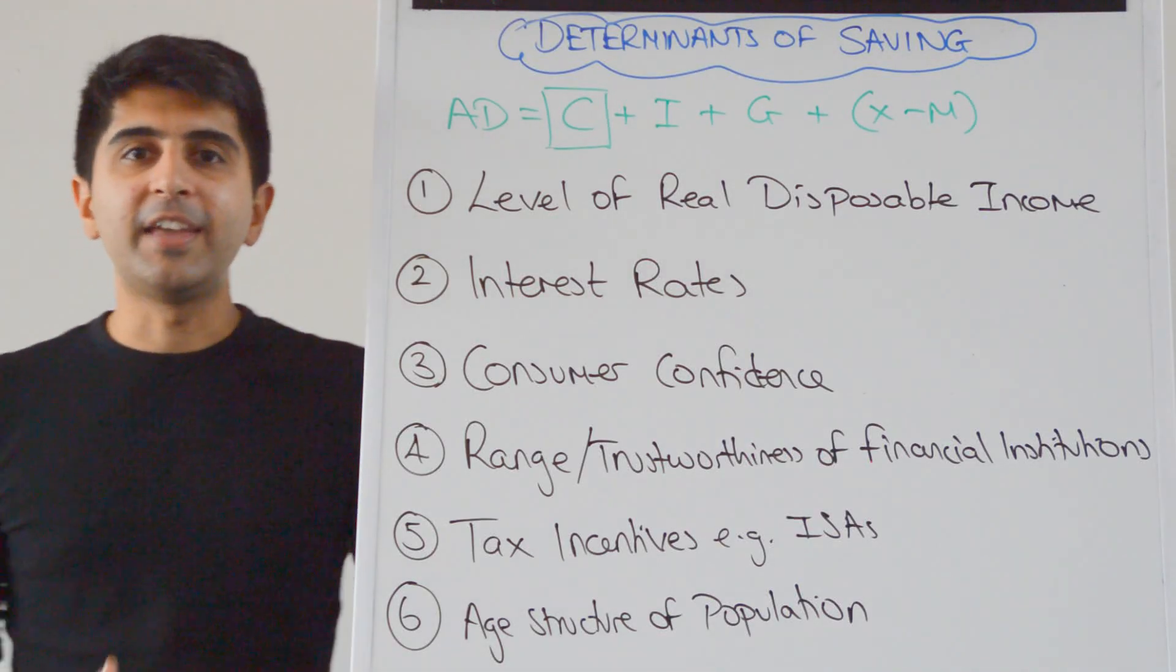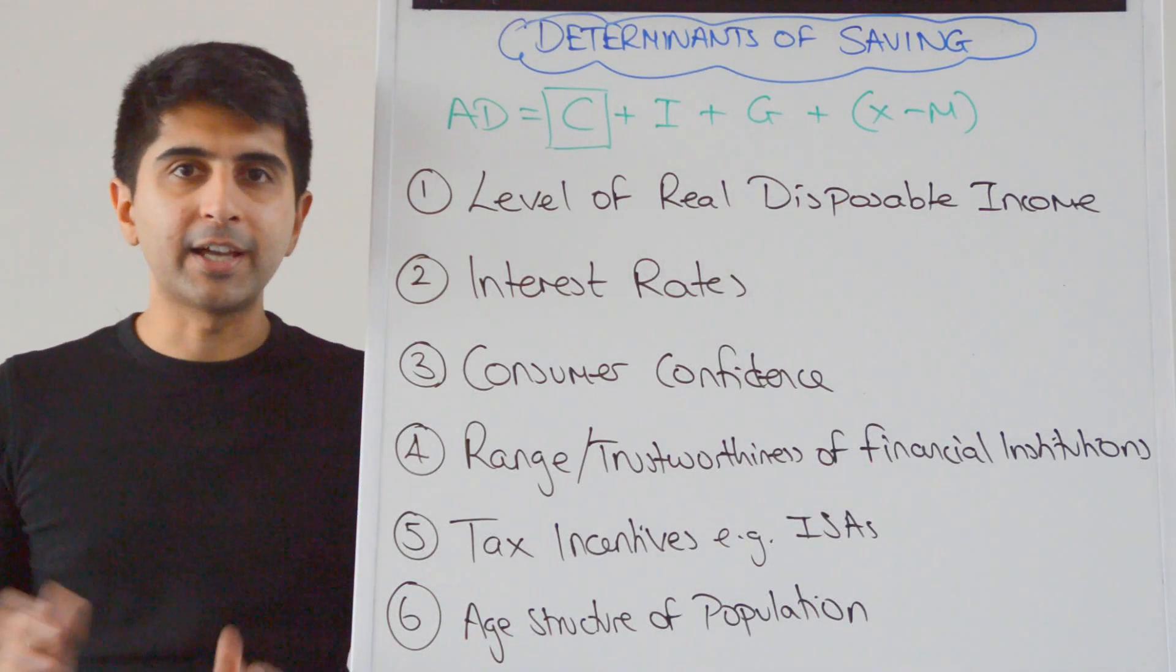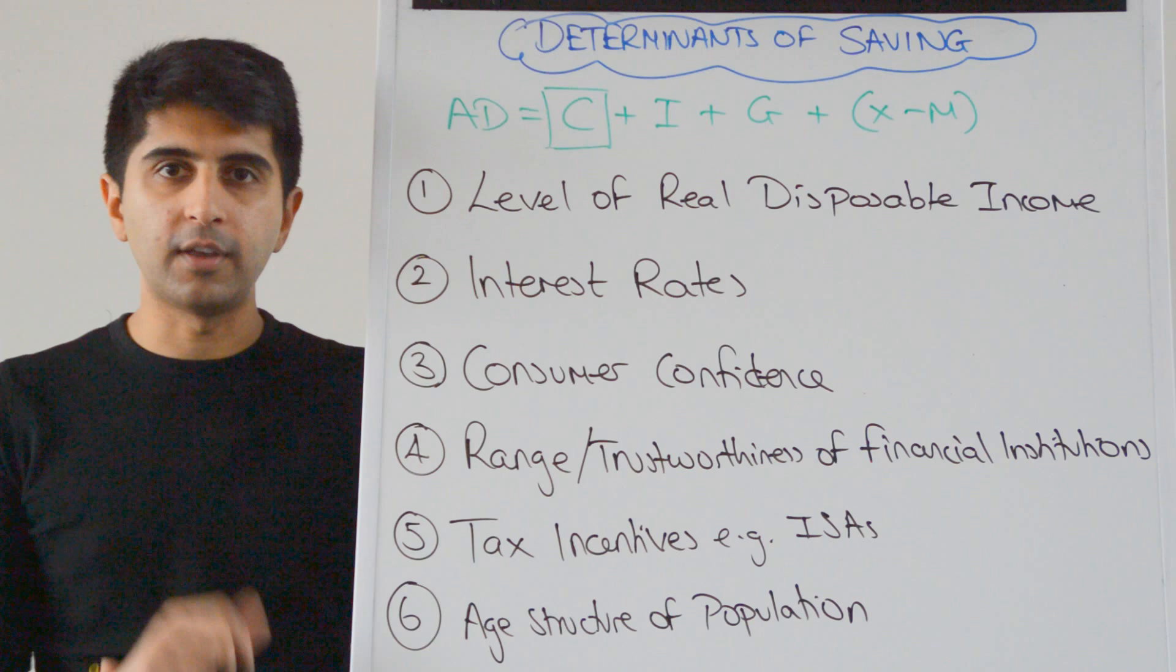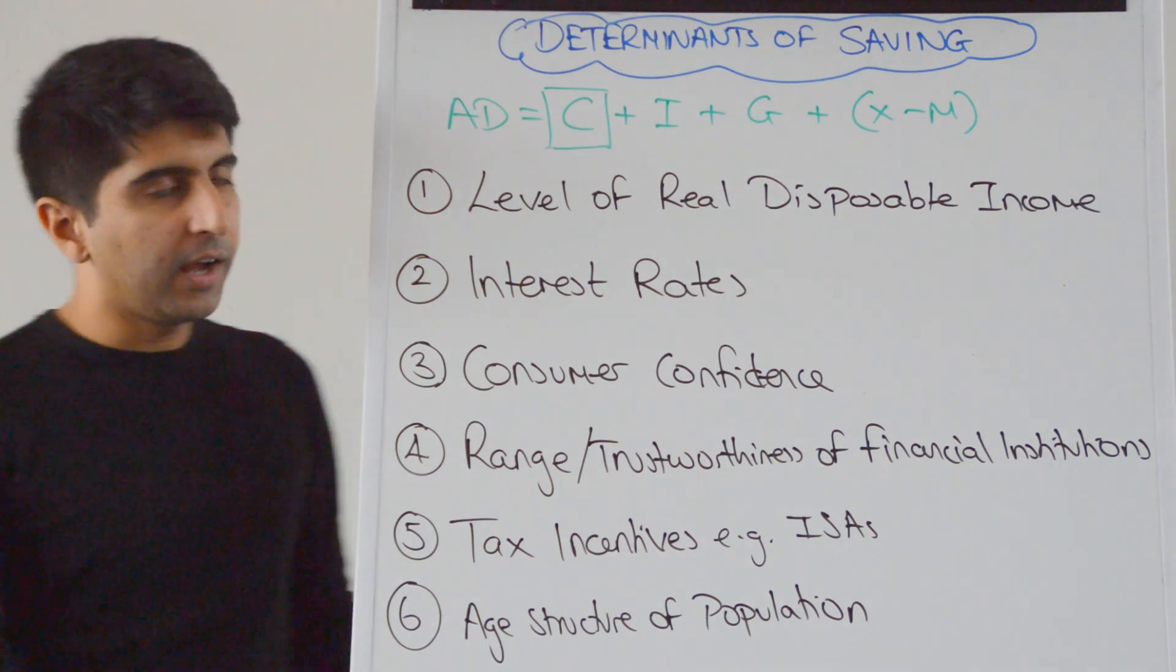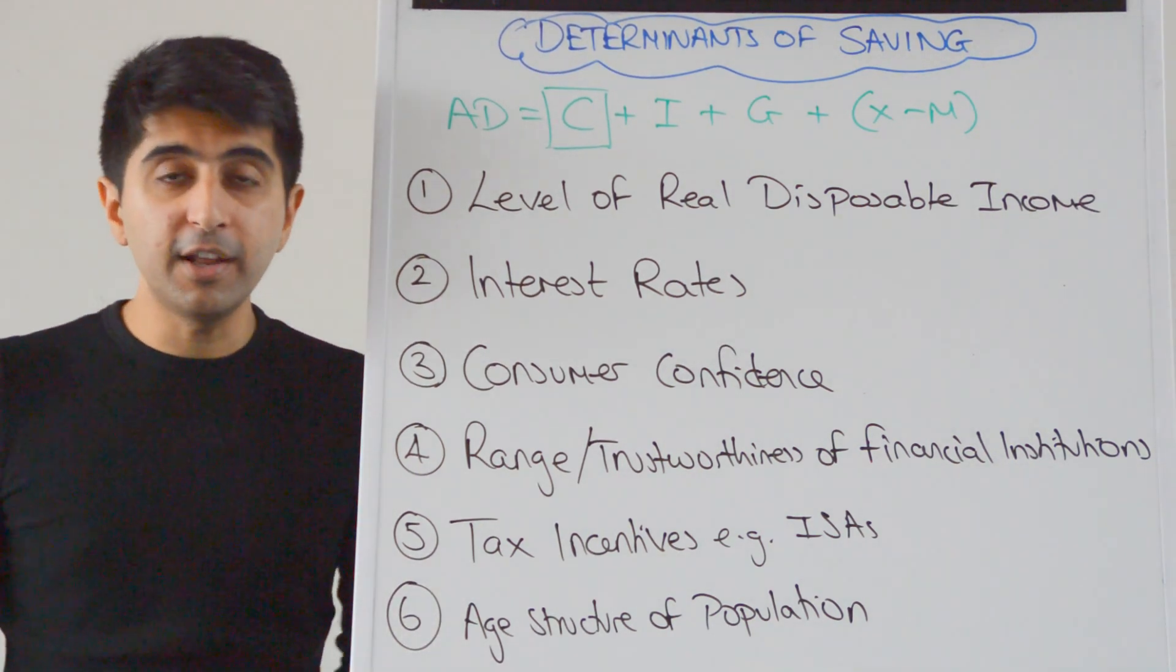Hi everybody. Saving is that part of disposable income that is not spent on goods and services in the economy. And savings is a determinant of AD.